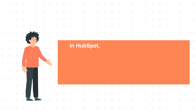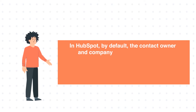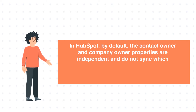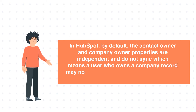In HubSpot, by default, the contact owner and company owner properties are independent and do not sync, which means a user who owns a company record may not own the associated contact records.